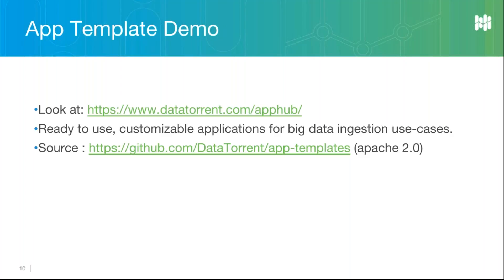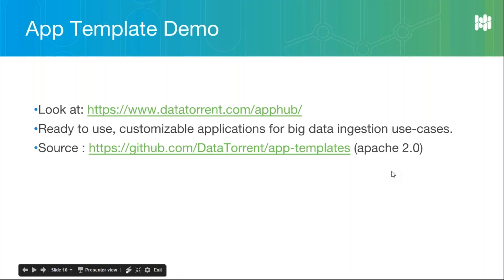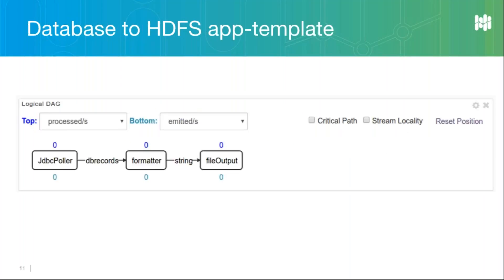The link for app templates is datatorrent.com/apphub. For source code, you can refer to github.com under the DataTorrent handle, where there is a repository called apptemplates. This repository is also open-sourced under Apache, so you are free to fork it, clone it, do custom modifications, and bundle the applications with your software.